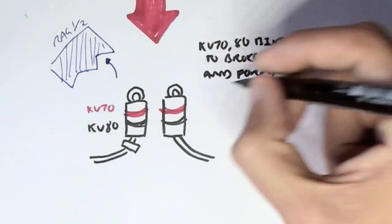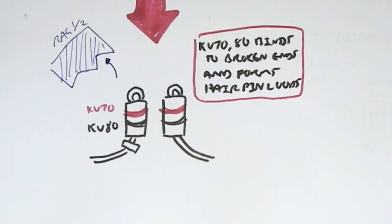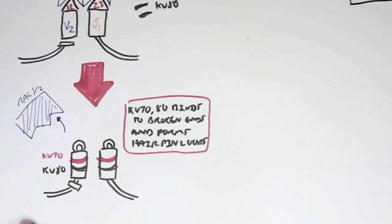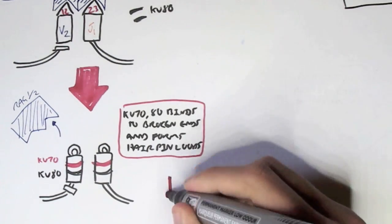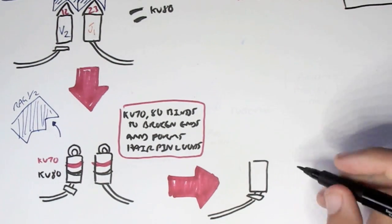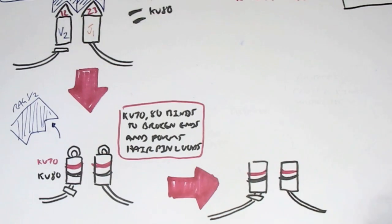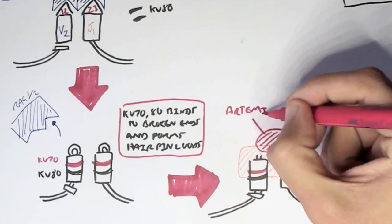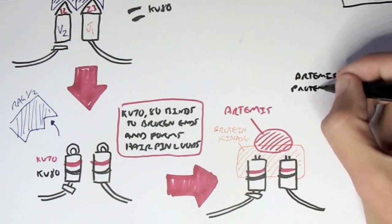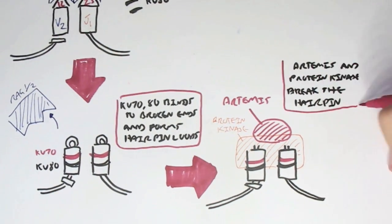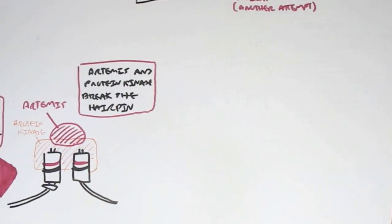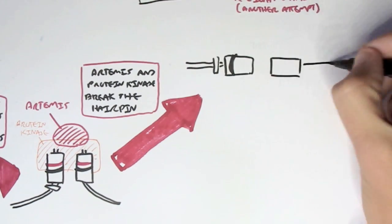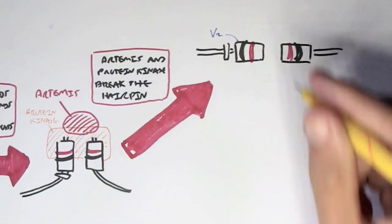RAG1 and RAG2 then cleave off the RSS recombination signal sequence. Following this, other proteins such as Ku70 and Ku80 bind onto the variable and joining segments. The Ku proteins initiate repair by forming a hairpin loop from where RAG1 and RAG2 broke off the RSS. After forming the hairpin loop, other proteins enter the system.